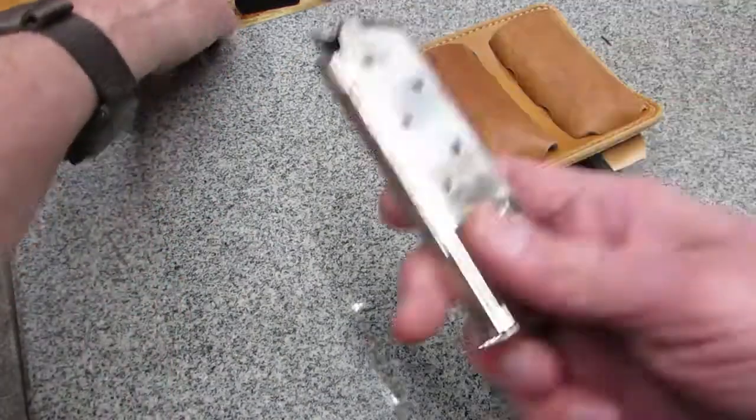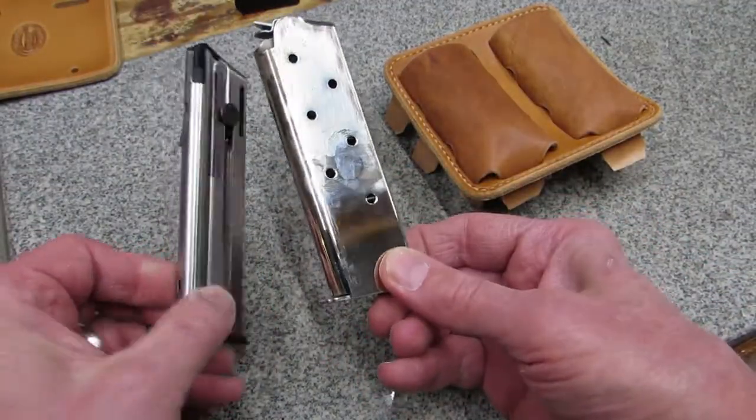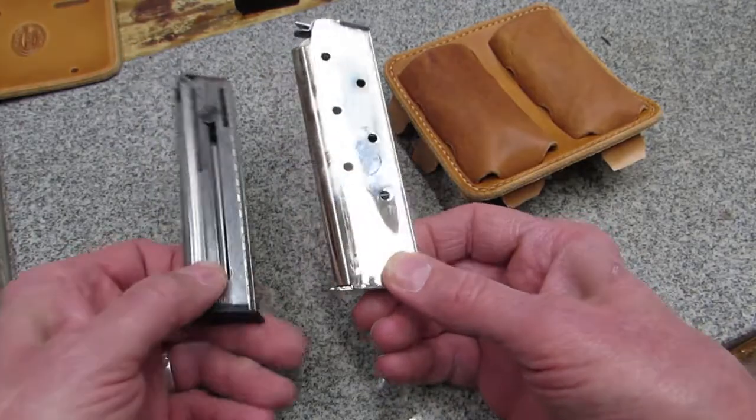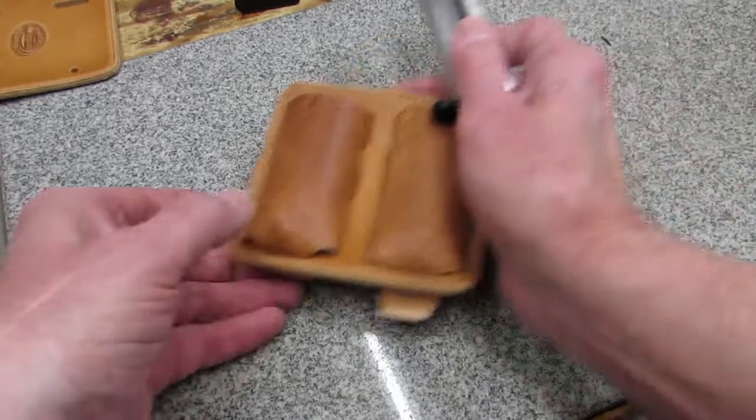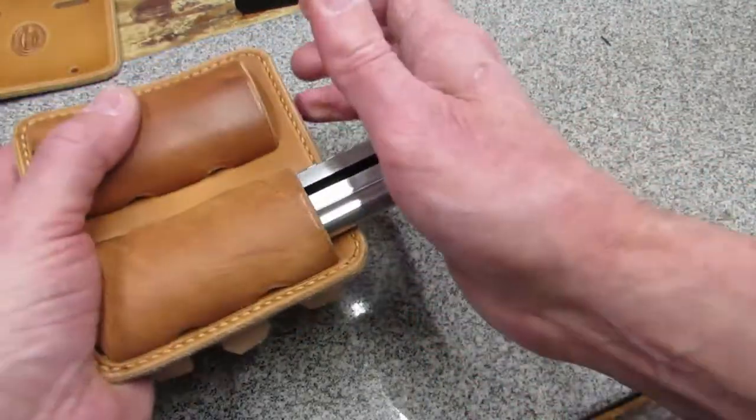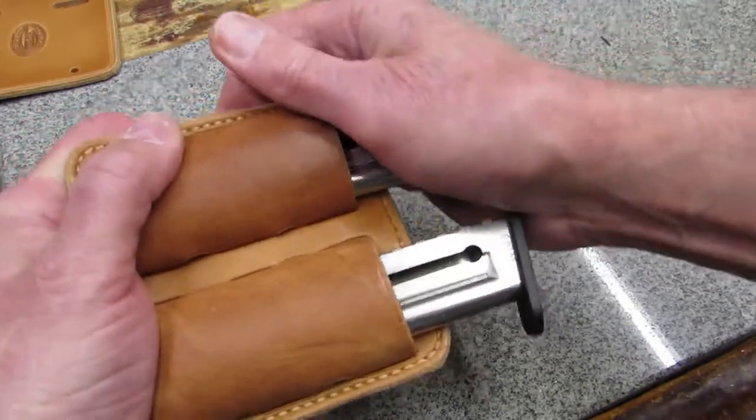On the right is a 45 caliber magazine for 1911. On the left is a 22 caliber magazine. The same single stack magazine pouch face is used to create secure mag pouches for both as well as every other single stack pistol cartridge magazine.